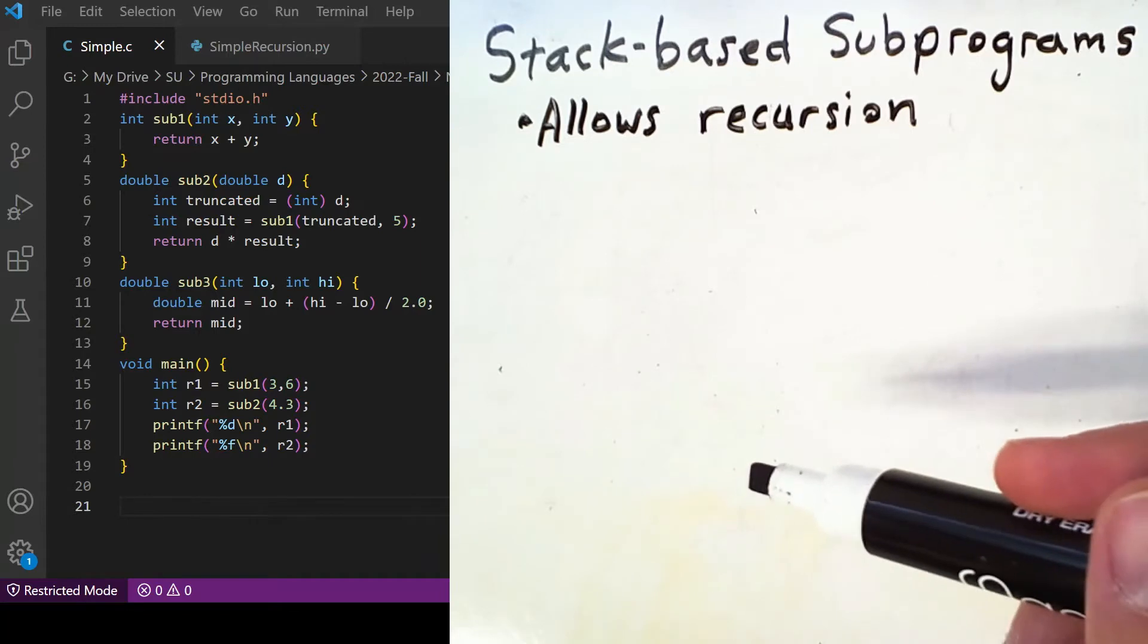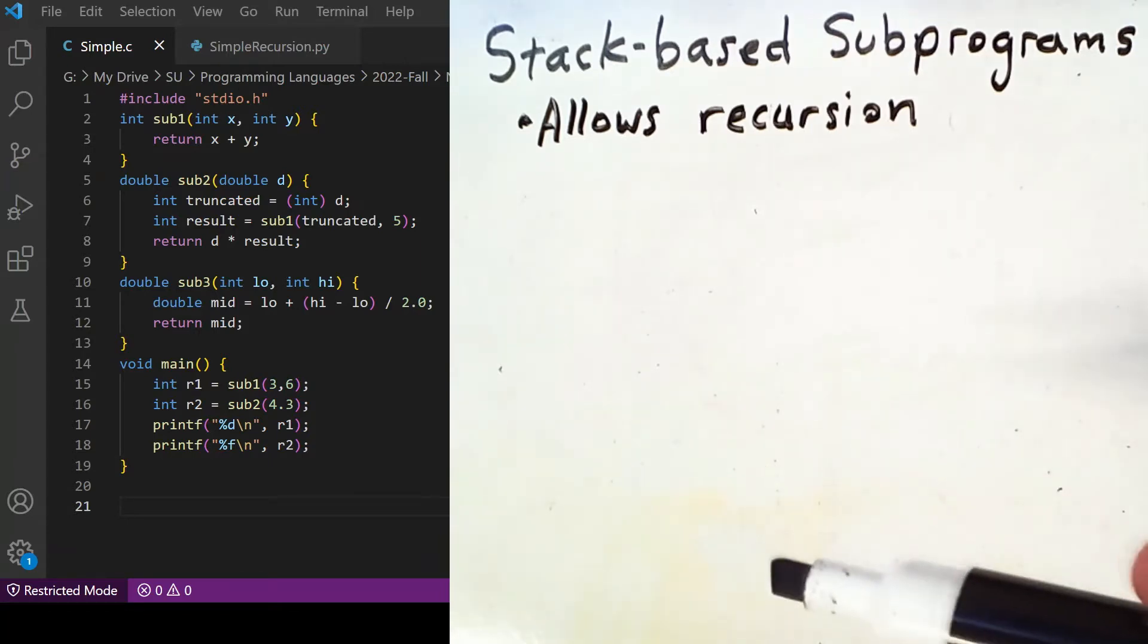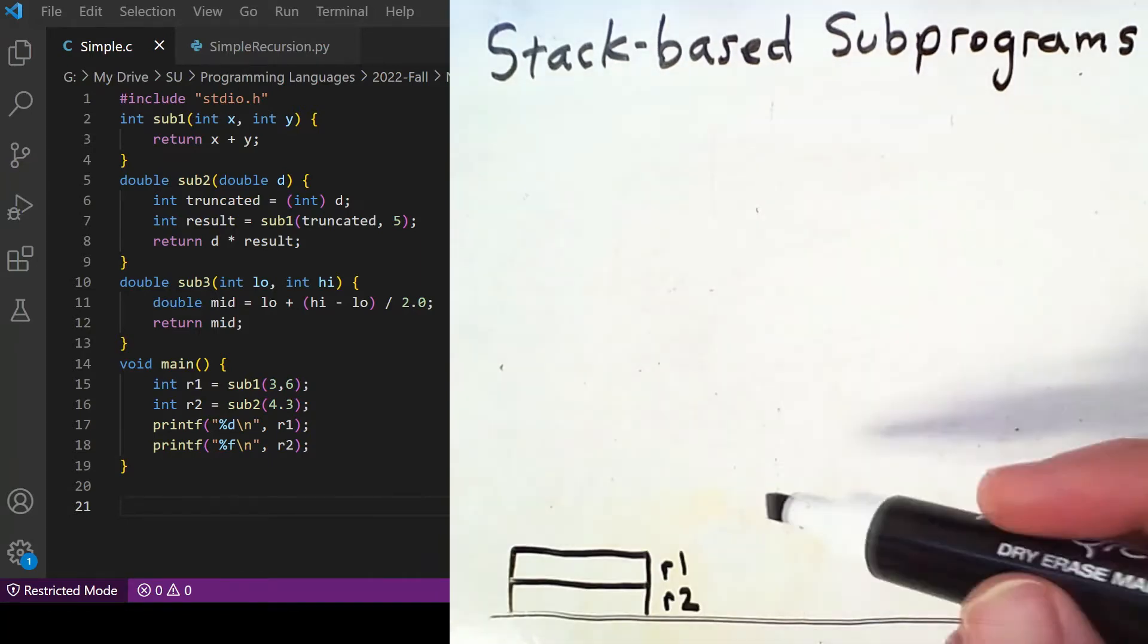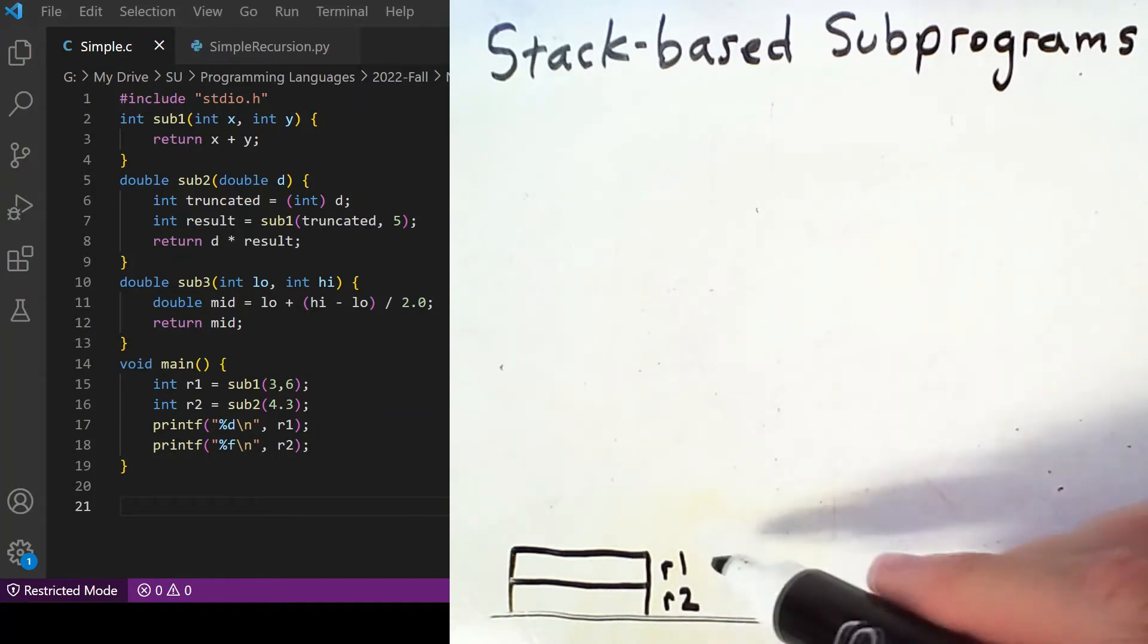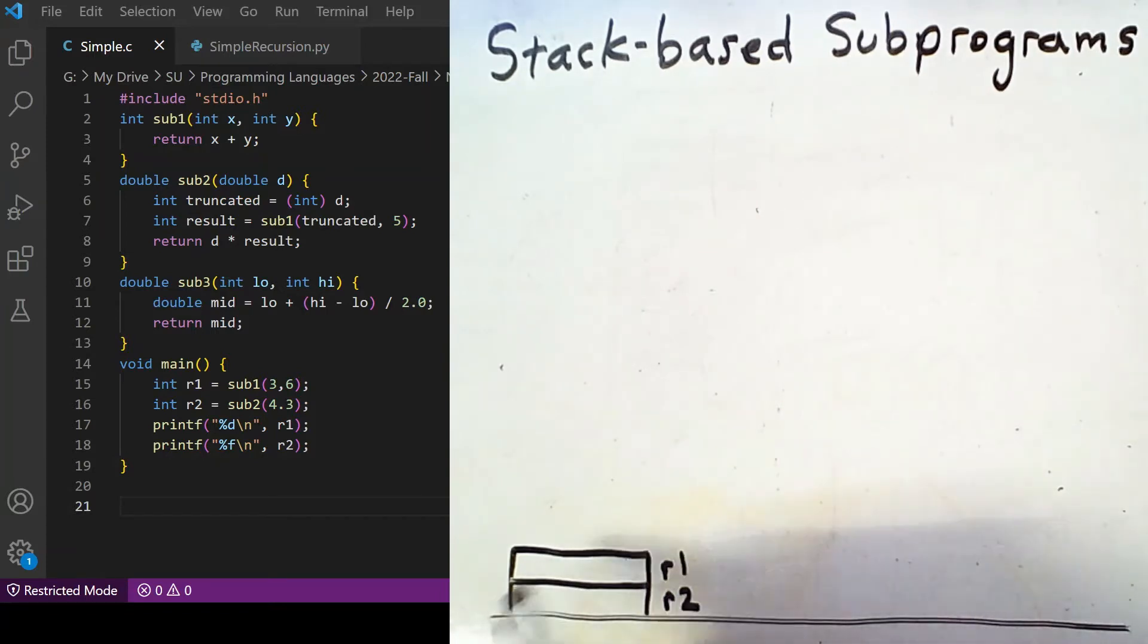This is where we will place our activation records. Notice that I've modified the code of the main function slightly to add these two local variables, R1 and R2. These will be inside our first activation record, which is placed on the stack. So this is the activation record for the main function.